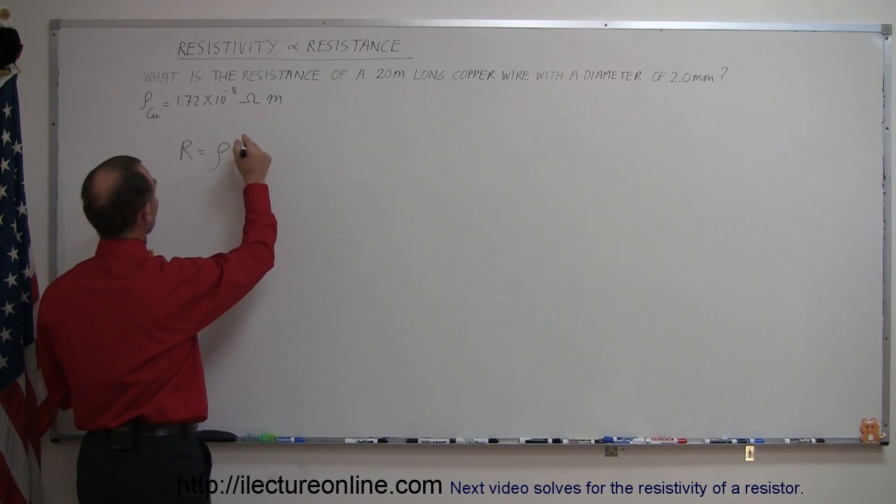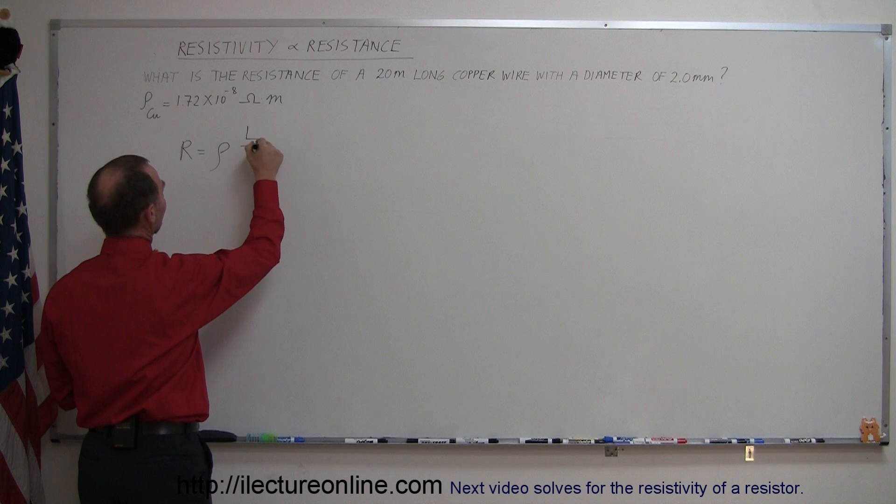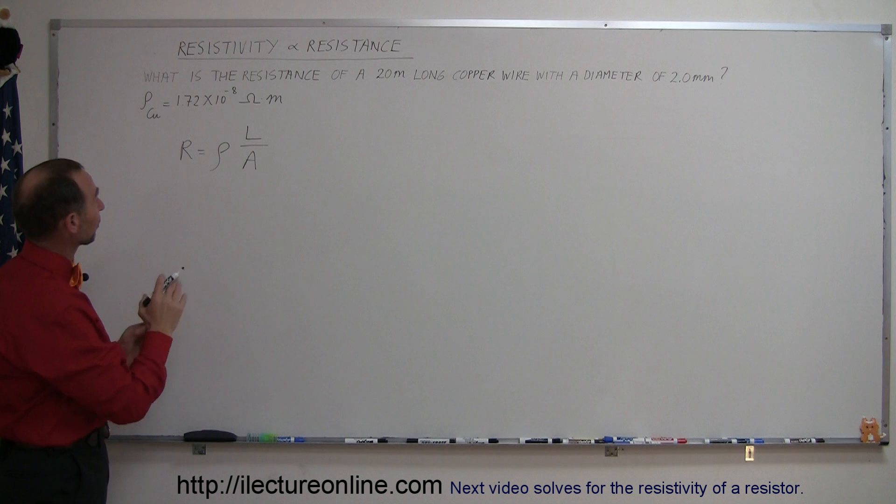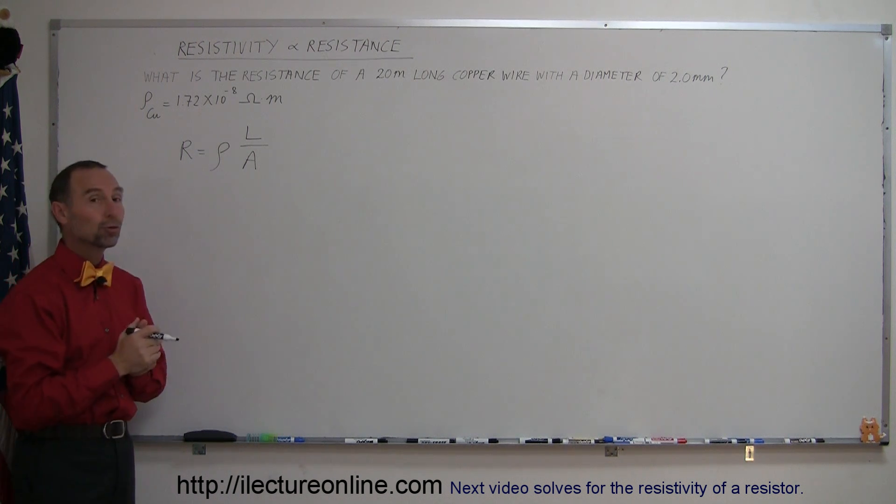So this is the resistivity of the material times the length divided by the cross-sectional area. In our particular problem, they're asking you to find the resistance of a 20 meter long copper wire with a diameter of 2 millimeters.